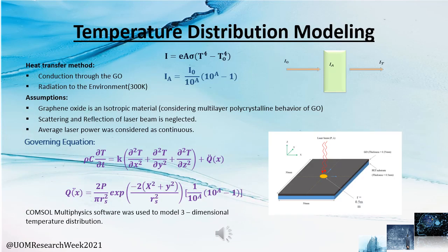As the next step, we did temperature distribution modeling. We considered heat transfer occurring by two methods: conduction through the graphene oxide layer, and radiation to the environment. Several assumptions were made: graphene oxide is an isotropic material, considered due to its multi-layer polycrystalline behavior; scattering and reflection of the laser beam are neglected; and average laser power was considered as continuous. Using heat conduction equations and considering non-steady state, a governing equation was derived. For three-dimensional temperature distribution of the graphene oxide film, we used COMSOL Multiphysics software for modeling.